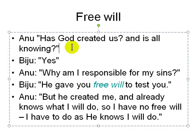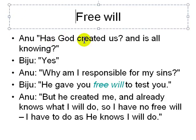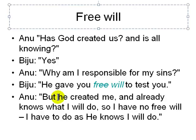Similarly on the topic of free will — a topic not fully resolved, found in both philosophy and probability theory. Anu asks: has God created us and is he all-knowing? Biji says yes. Then Anu asks why she is responsible for her sins if God created her and knows everything she does. Biji responds that God gave her free will to test her. But Anu counters: if God created her and already knows what she will do, she has no free will — she has to do as he knows she will do. This raises the question of who is responsible for your actions: do you have genuine choice, or are you programmed by the laws of physics or God?